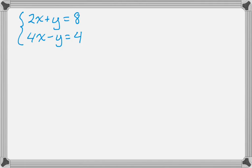The first thing we need is a system. Say we have 2x plus y equals 8, and 4x minus y equals 4.